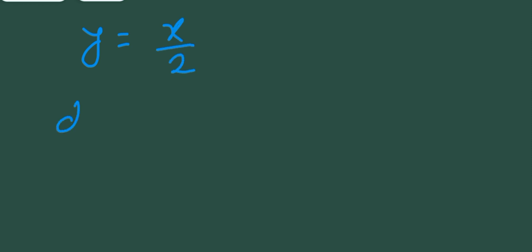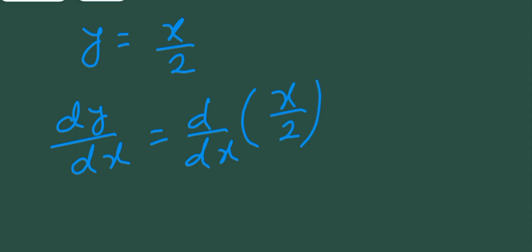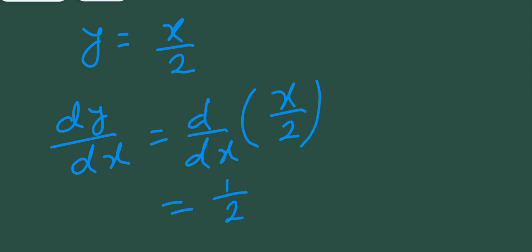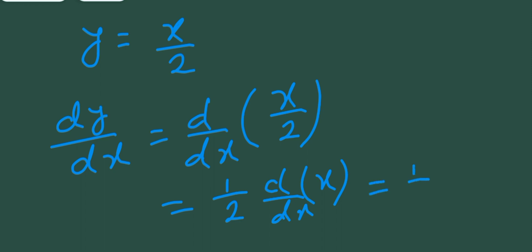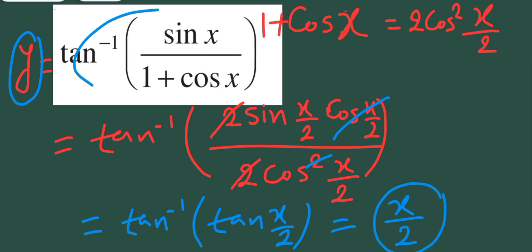Now we have to find the derivative of y. So dy/dx is the derivative of x/2 with respect to x. Since 1/2 is a constant multiplied by x, it comes out, and the derivative of x with respect to x is 1. So dy/dx = 1/2 times 1, which gives us 1/2. The derivative of tan inverse of sin x over 1 plus cos x is 1/2.